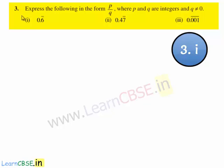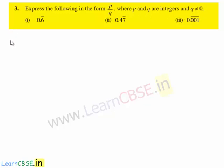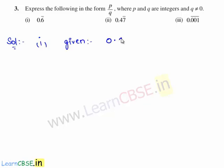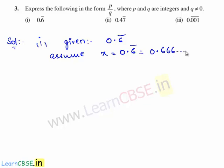Now let us move on to the third question. The question is: express the following in the form of p by q, where p and q are integers and q is not equal to 0. So let us move on to the solution. The first decimal expansion given is 0.6 bar. Let us assume x is equal to 0.6 bar, which is 0.666 and so on.